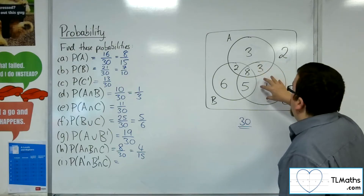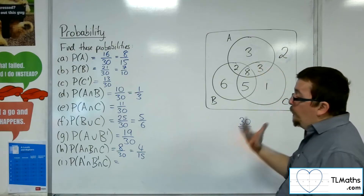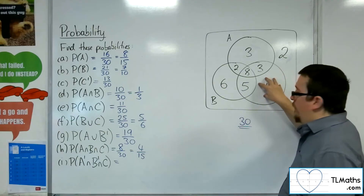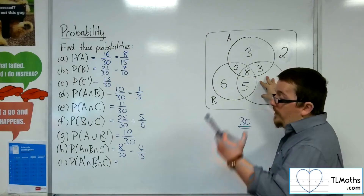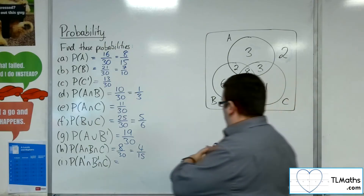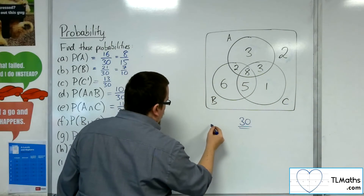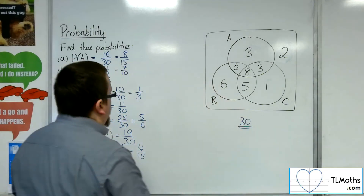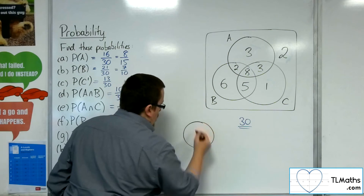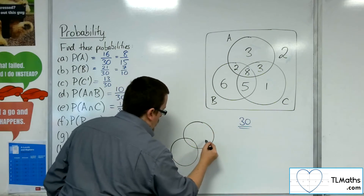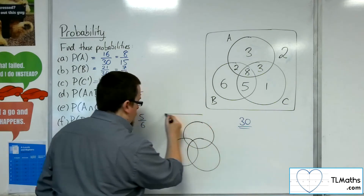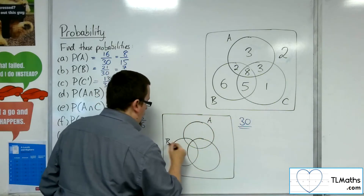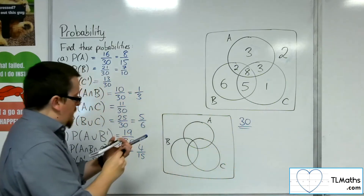If you think about the overlap of those three regions, there's only one number covered by all three. Let me try and draw it from scratch — that would probably be a better idea. So there's A, there's B, there's C.